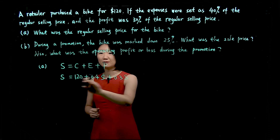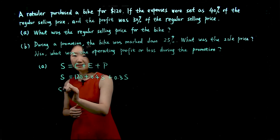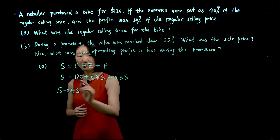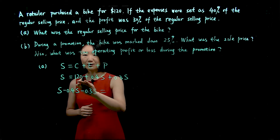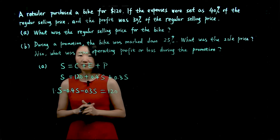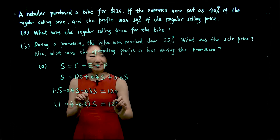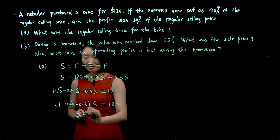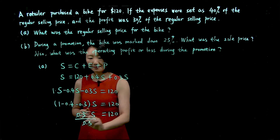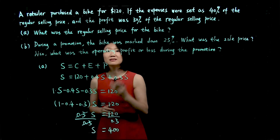This is an equation with one variable, S. We need to solve it. Moving all terms with S to the left-hand side: S minus 0.4S minus 0.3S equals 120. S can be considered as 1S, so on the left-hand side we have 1 minus 0.4 minus 0.3 times S equals 120, which gives 0.3S equals 120. Dividing both sides by 0.3, S equals $400. So the regular selling price for the bike is $400.